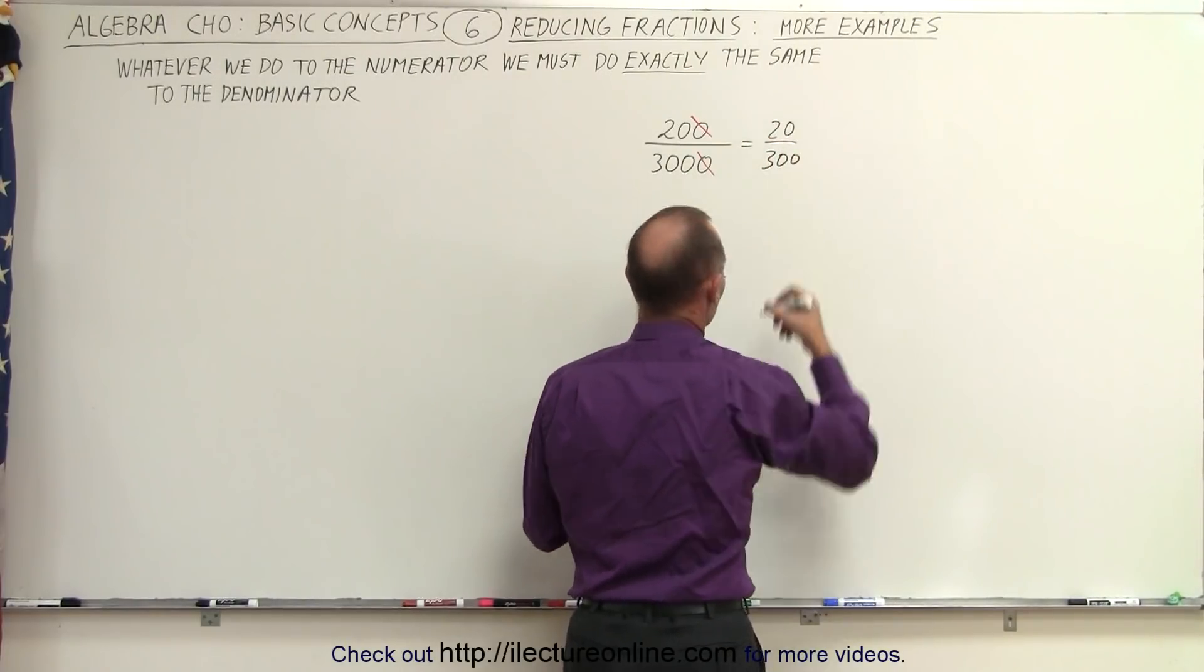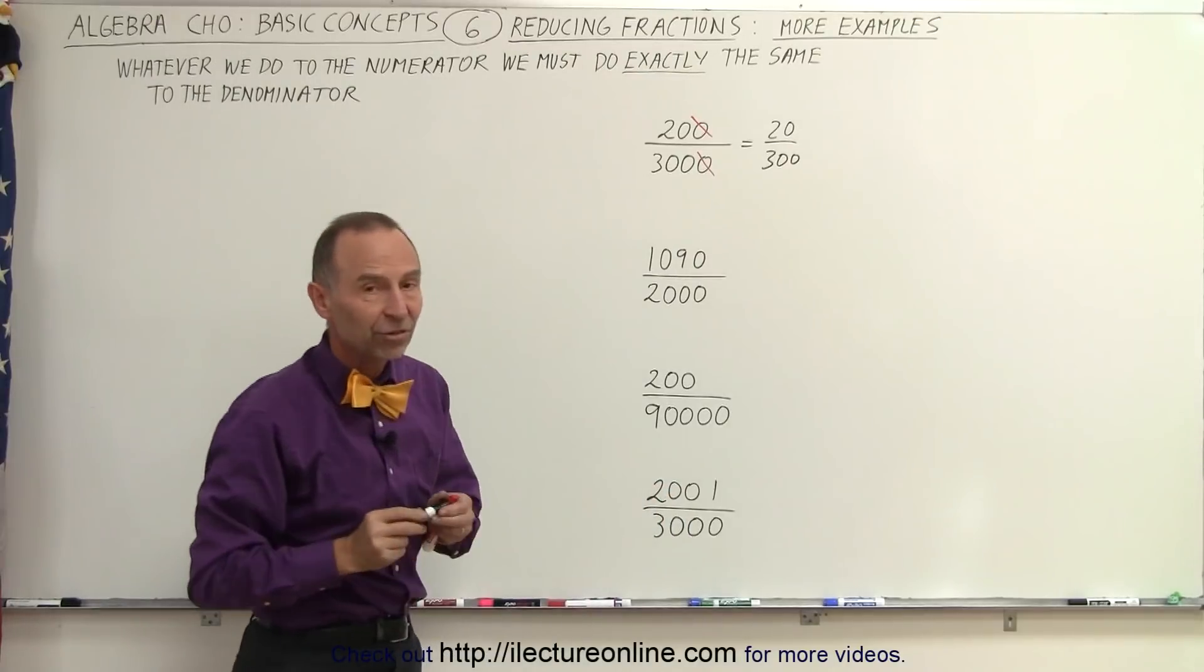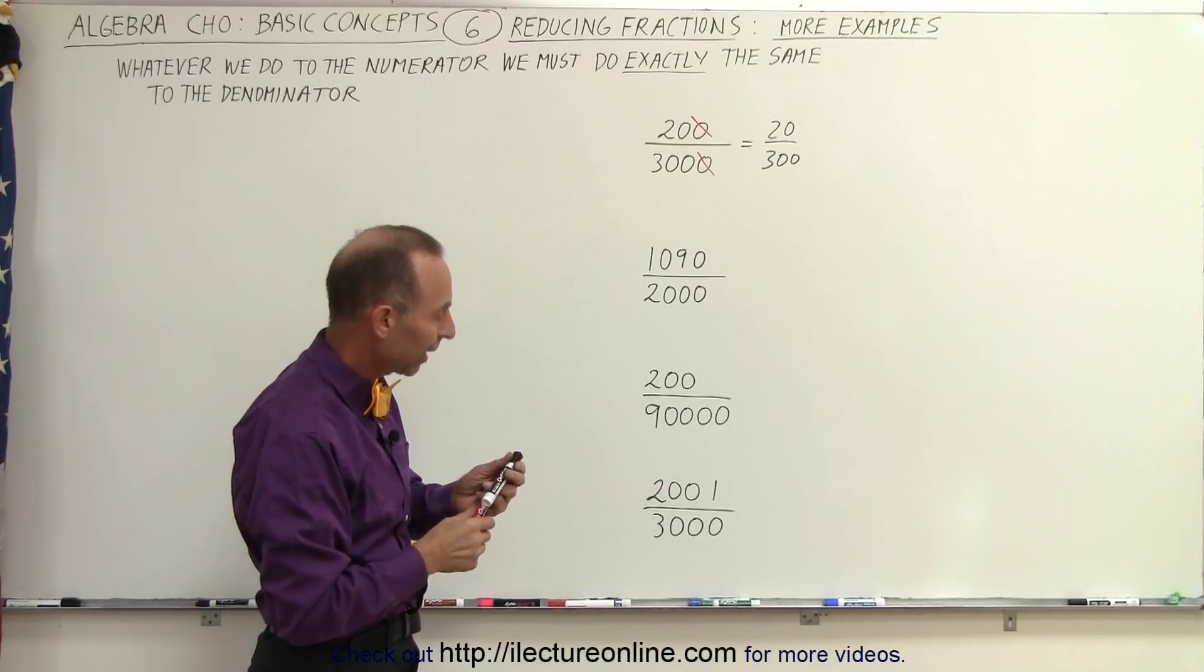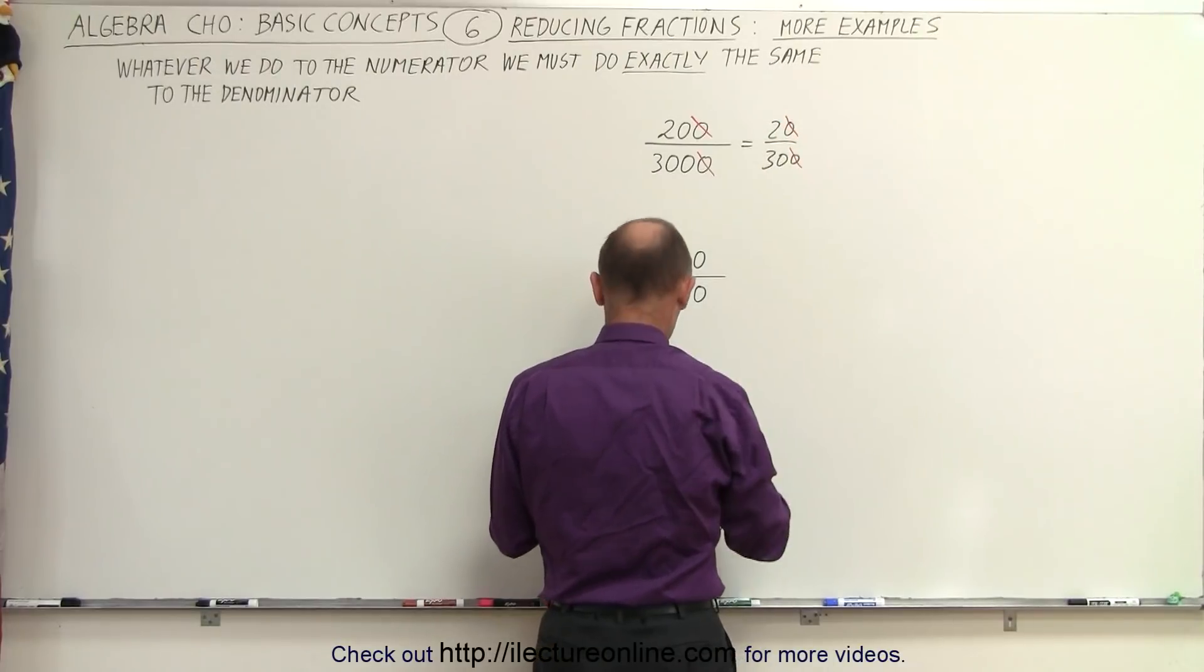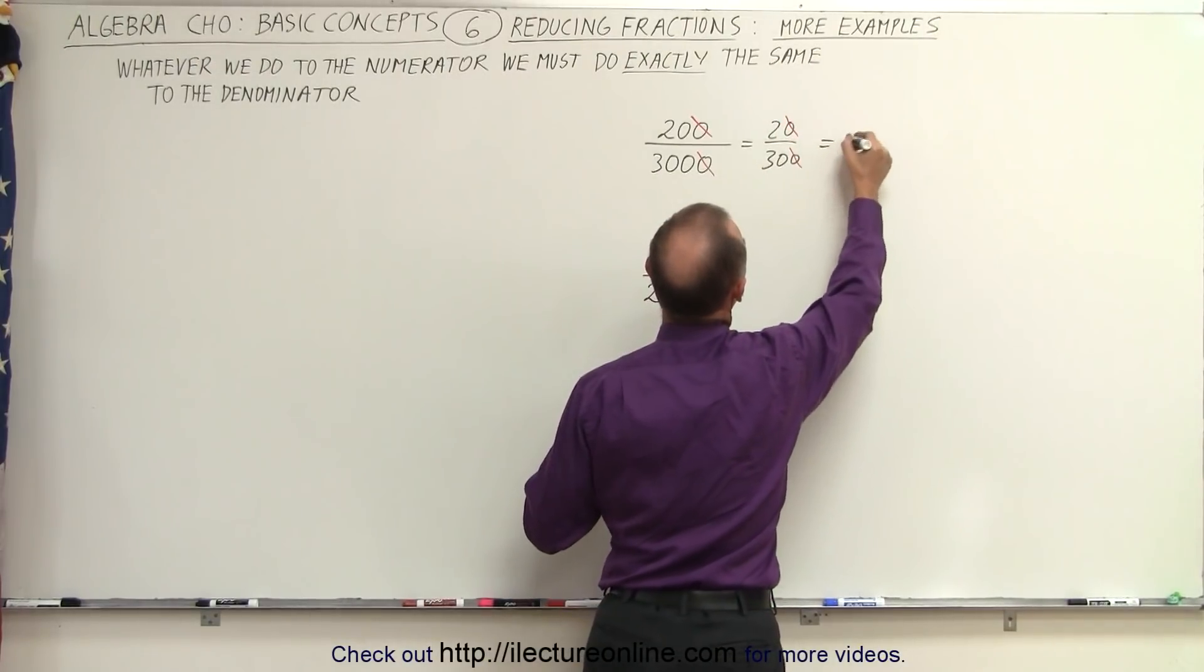And again, you can see that on the right, both of them end in a 0, which means we can divide by 10 again. So we can get rid of this 0 and this 0, and so this then becomes the fraction 2 divided by 30.